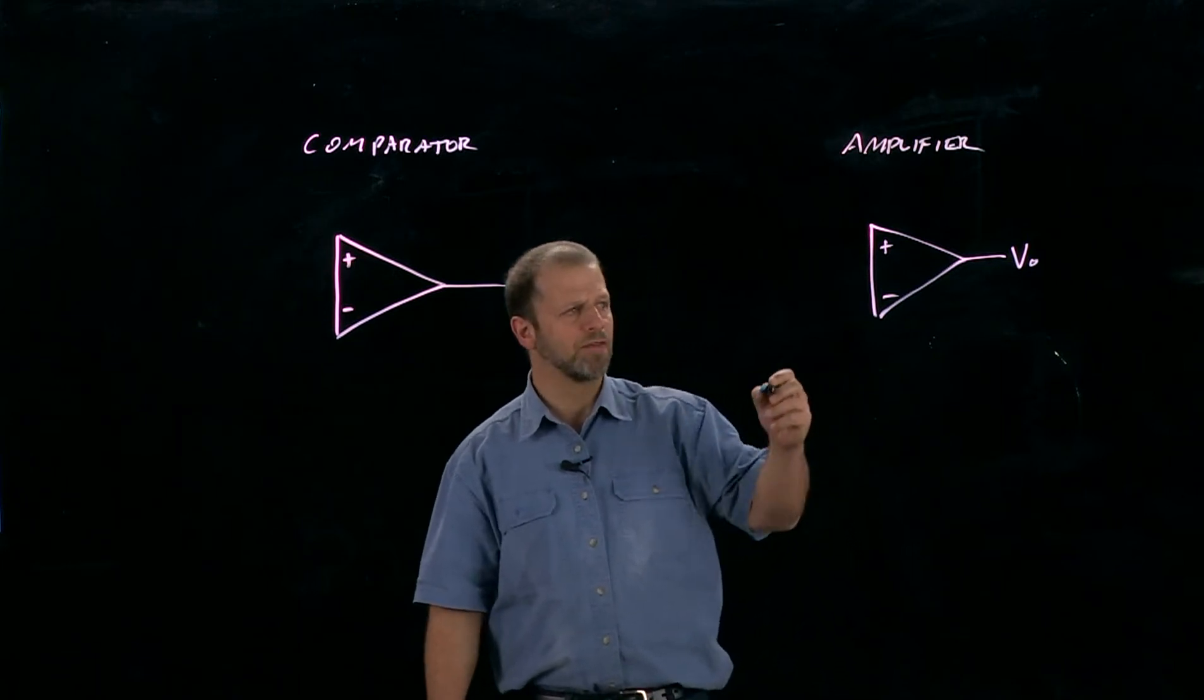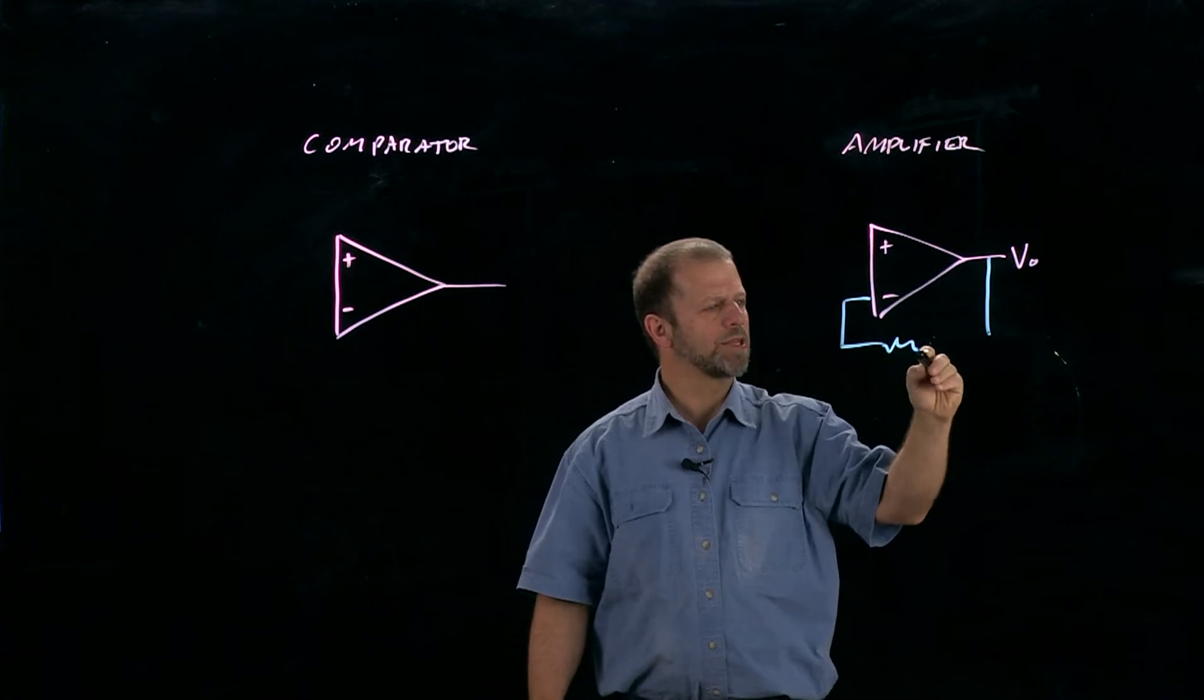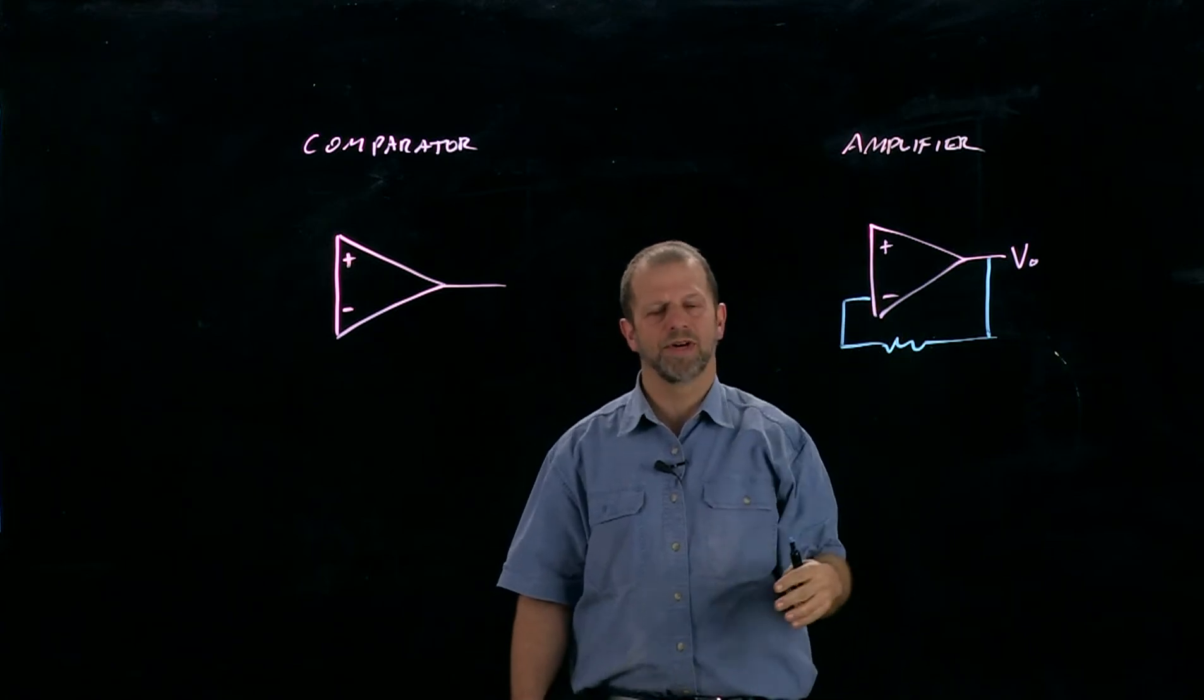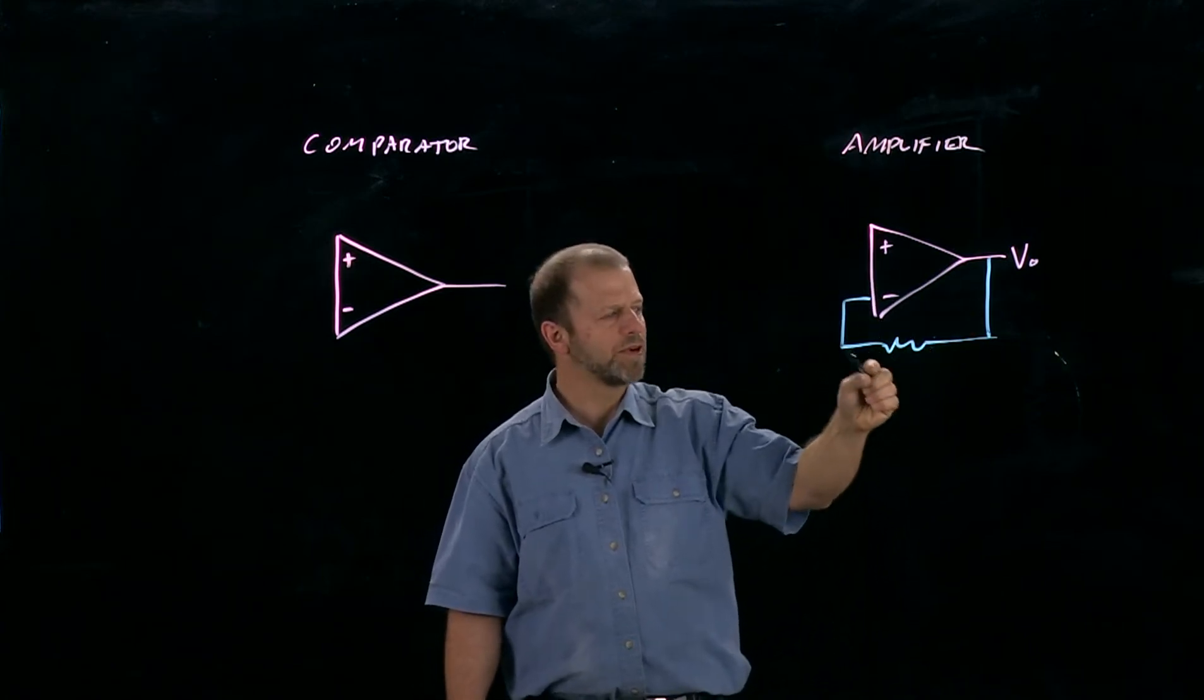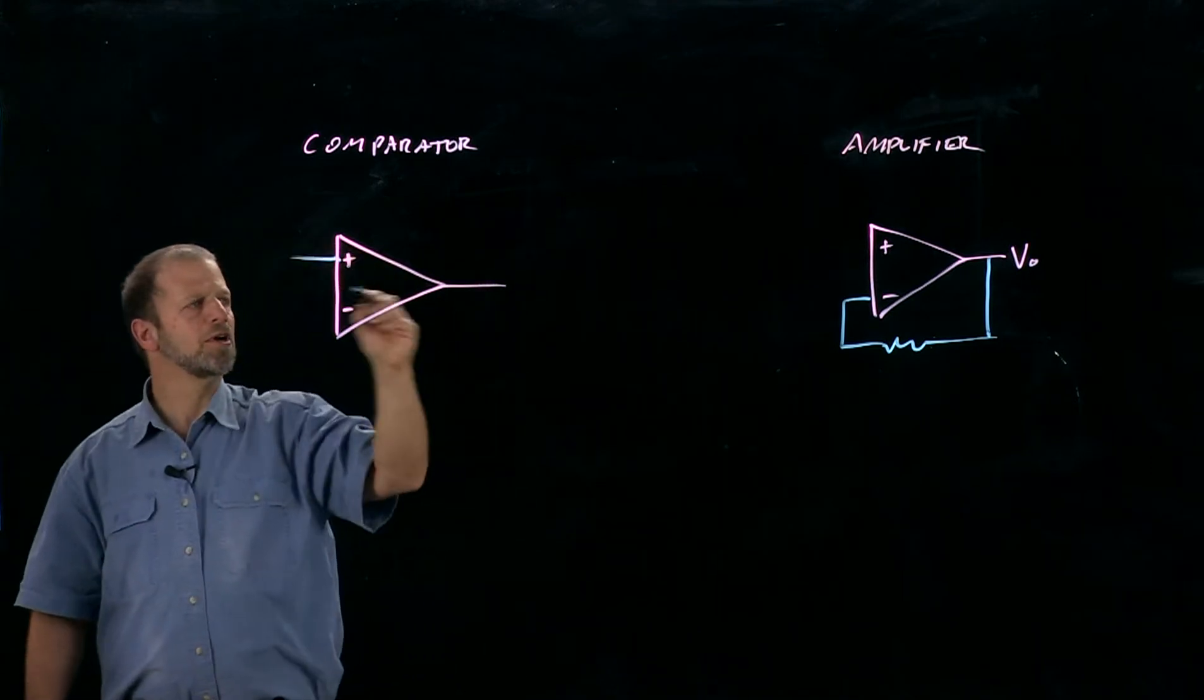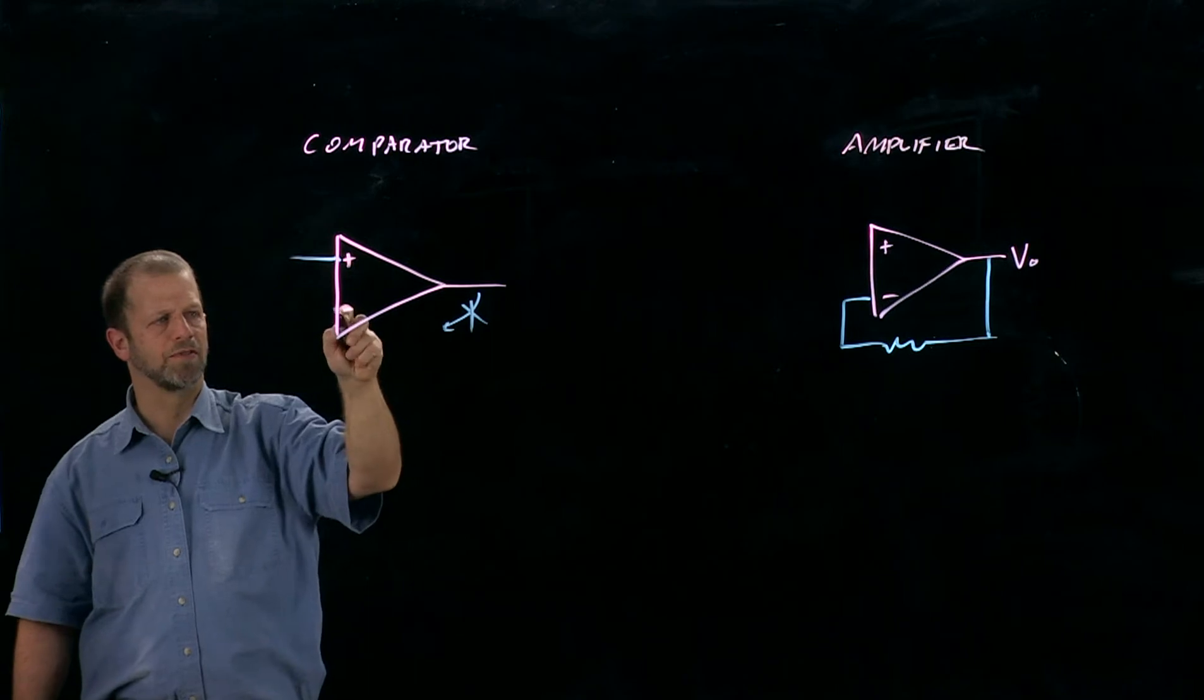The fundamental difference in configuration is that the amplifier has a feedback route from the output to the inverting input of the op-amp. It could be overall an inverting amplifier or a non-inverting amplifier, but fundamentally it's able to affect its own inputs by what it does with its output, whereas with a comparator, there's no feedback from the output to the inverting input.